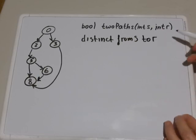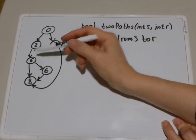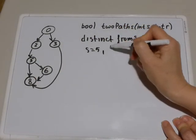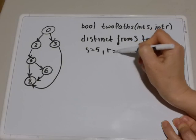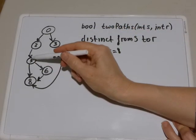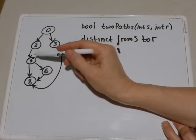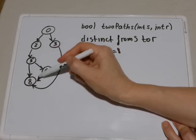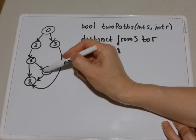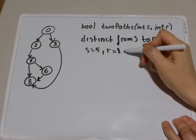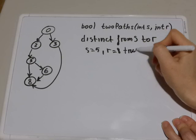Let me give you an example. For example, if we take s equals 5 and r equals 8, there is one path from 5 to 8 consisting of one edge and there is another path 5, 6 to 8. This is a distinct path. Two paths are distinct if they do not share any edges whatsoever. So in this case your algorithm will return true.